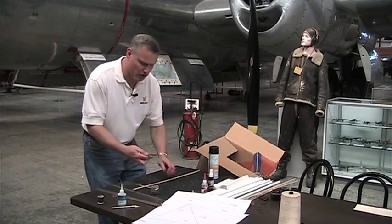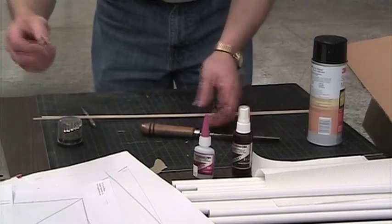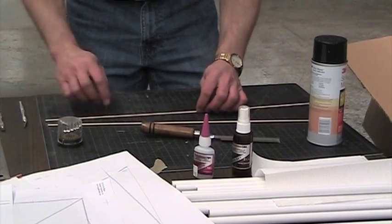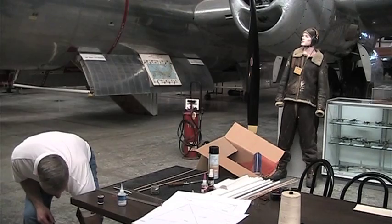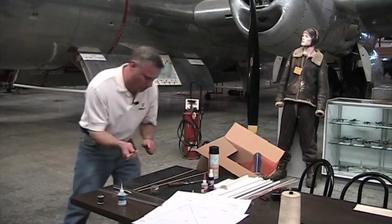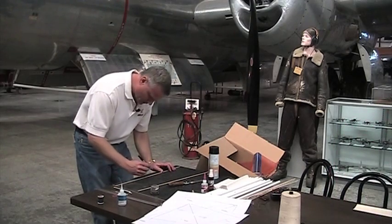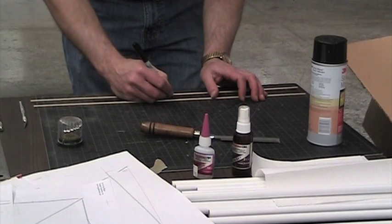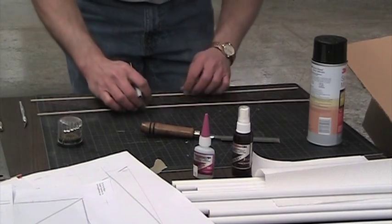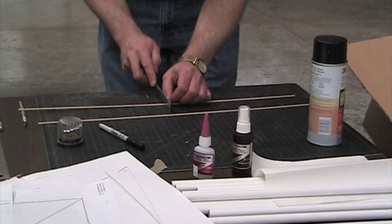Now you can either use a razor saw like this to cut it, or a hobby knife, I'll show you both ways. First I'm just going to mark it. I've got a Sharpie here, I'll mark it right in the middle, 12 inches. Here's the other one, 12 inches. My sticks are actually longer than 24 inches, so I'll have to make four cuts.